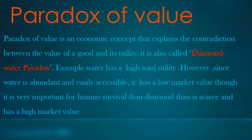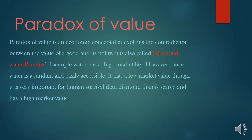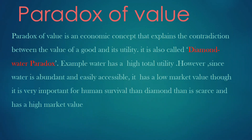The paradox of value is an economic concept that explains the contradiction between the value of a good and its utility. It is also called the diamond-water paradox. For example, water has a high total utility; however, since water is abundant and easily accessible, it has a low market value, though it is very important for human survival — unlike diamond, which is scarce and has a high market value.